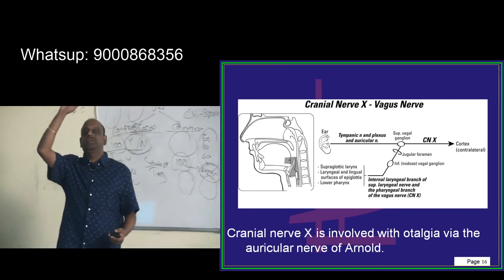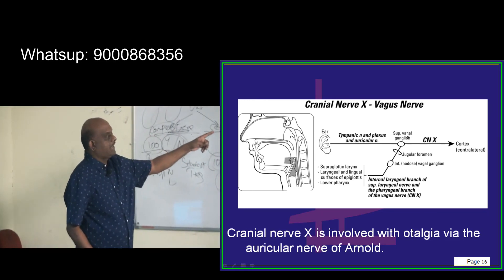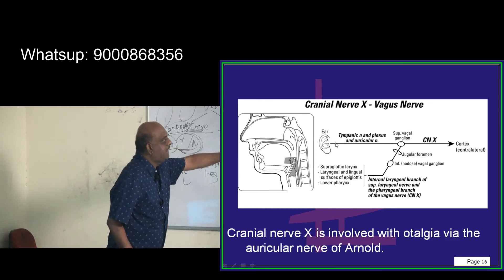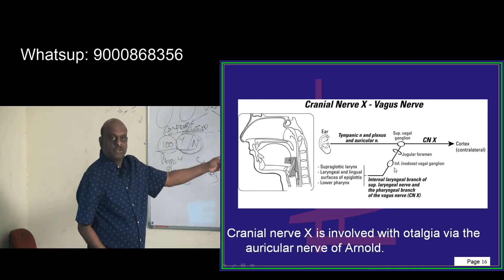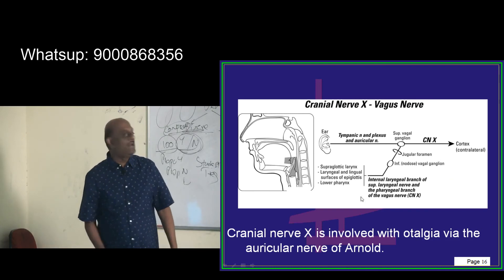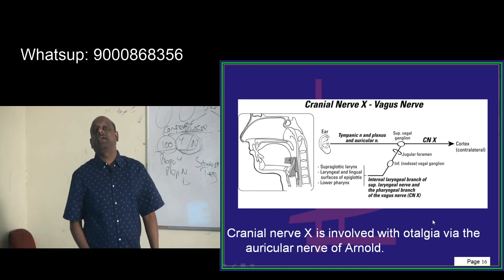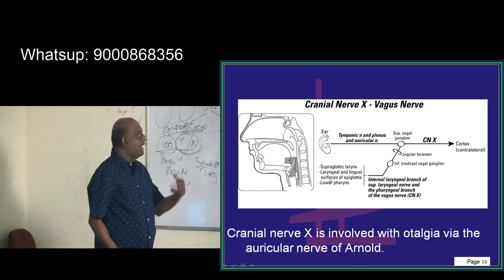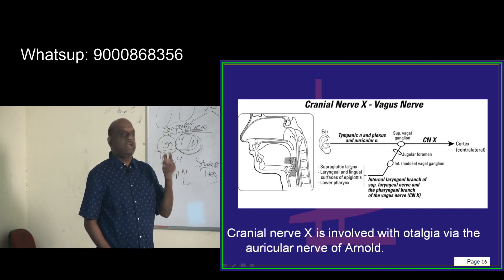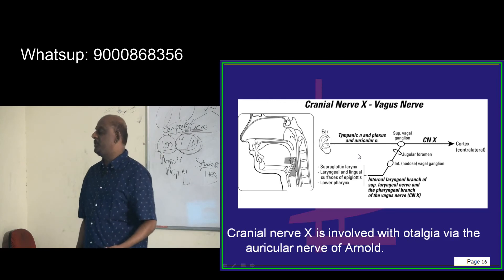Finally comes the vagus — cranial nerve 10. The vagus has a superior vagal ganglion, giving rise to the tympanic nerve and plexus and an auricular nerve to the ear. The vagus also passes through the jugular foramen and reaches the inferior vagal ganglion — the nodose ganglion. Through that, it gives rise to the internal laryngeal, superior laryngeal, and pharyngeal branches of the vagus, supplying the supraglottic larynx and the laryngeal surface of the epiglottis. Any laryngitis, epiglottitis, or pharyngitis leads to referred pain to the ear through the auricular nerve of the vagus.